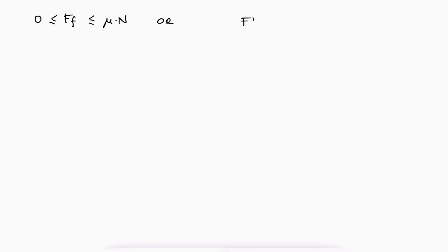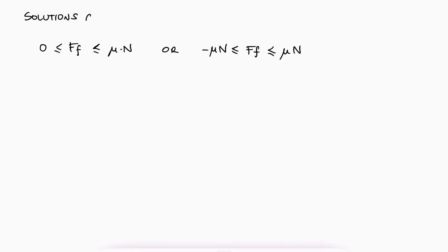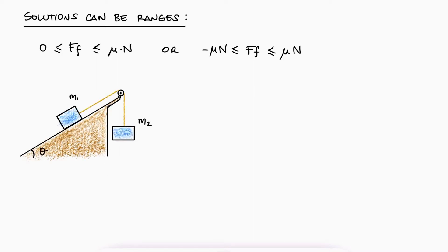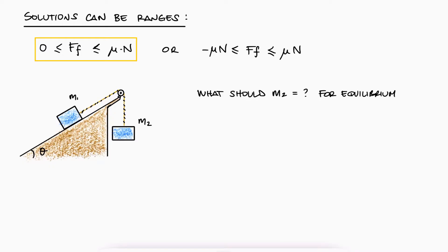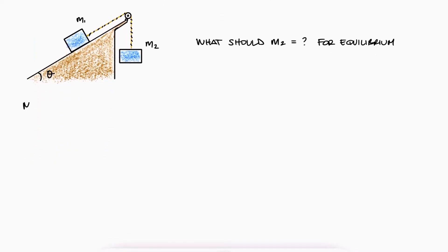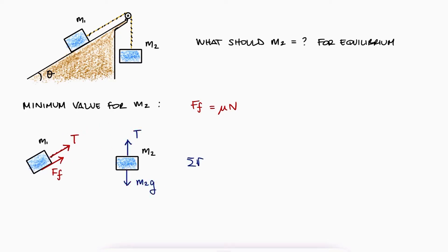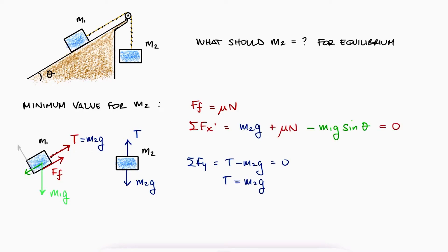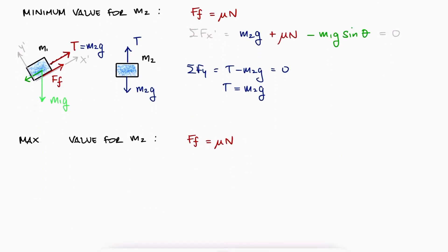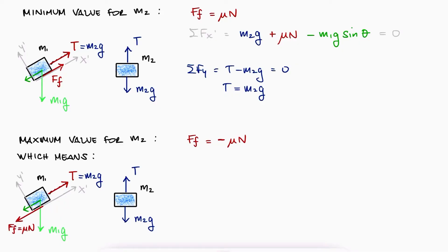The fact that any friction force has a range from 0 to its maximum value mu·N — or in either direction — can result in problems where the answer is not a specific value but a range of values. If for example the box was connected to another hanging box through a pulley, finding the mass of the hanging box for equilibrium would not just be a single specific value. This is a consequence of the friction force being anything from 0 to the max value of mu·N in either direction. The minimum value of the mass of the hanging box would be when the friction force is pointing upward and equal to mu·N.